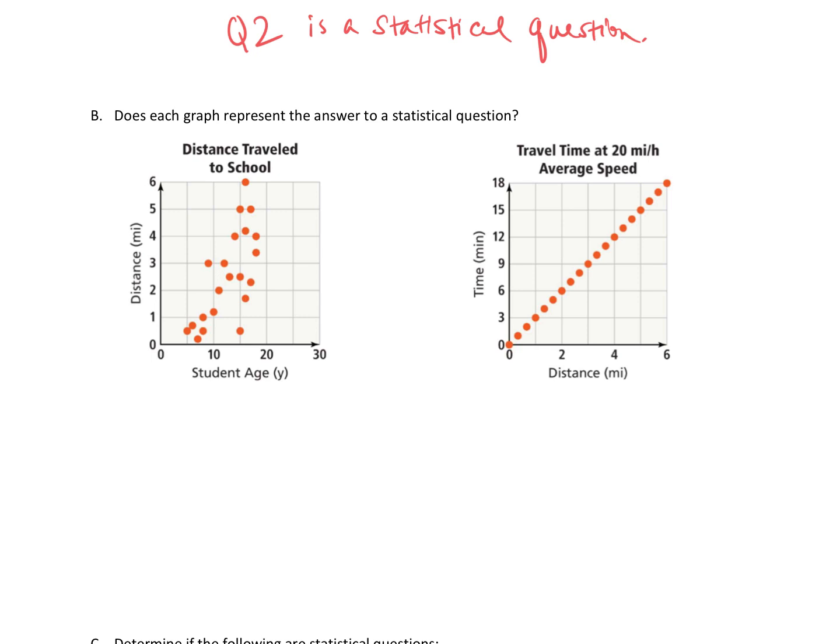So if you look at the first graph, the data that we see is, well, first of all, distance traveled to school, that's what we're talking about. So we can see student ages versus distance in miles. So I can see how old the student is and what their distance was traveling to school. So the question that is being answered would be, how far do you travel to school? So this question is a statistical question because it's answered by gathering and summarizing varying data about students. We have gathered their ages, their distance traveled, we're able to summarize that. So this is a statistical question.